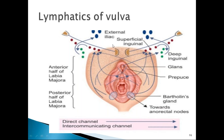Lymphatics of the vulva are of utmost importance, especially in malignancy, to determine whether lymphadenectomy should be bilateral or unilateral. The anterior half of labia majora and the mons have intercommunicating channels going to both ipsilateral and contralateral superficial inguinal nodes. The posterior half of labia majora drains directly into superficial inguinal nodes of the same side.